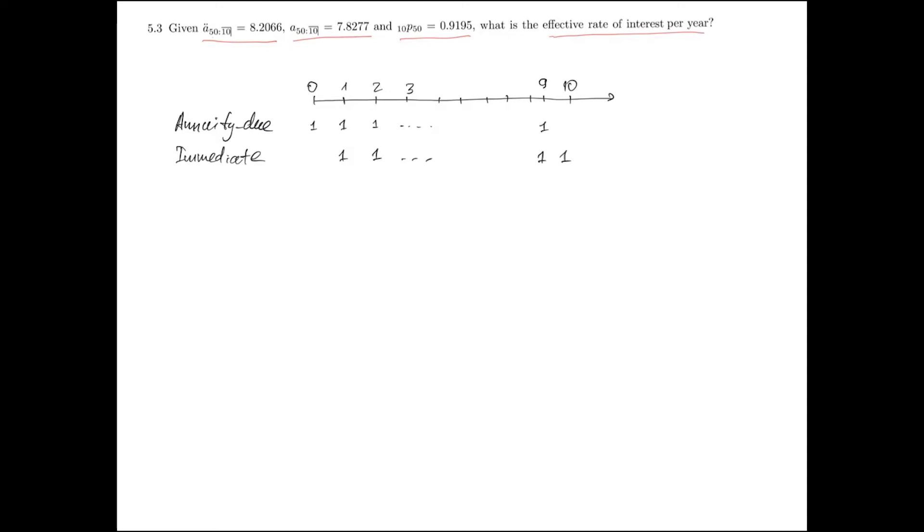It means that the expected present value of these two annuities is going to be equal if we subtract from the annuity due the first payment made at time zero and if we subtract from the term immediate annuity the last payment made at time 10 discounted at time zero, and this payment, the last payment, is made only conditional that the life is alive at this time.